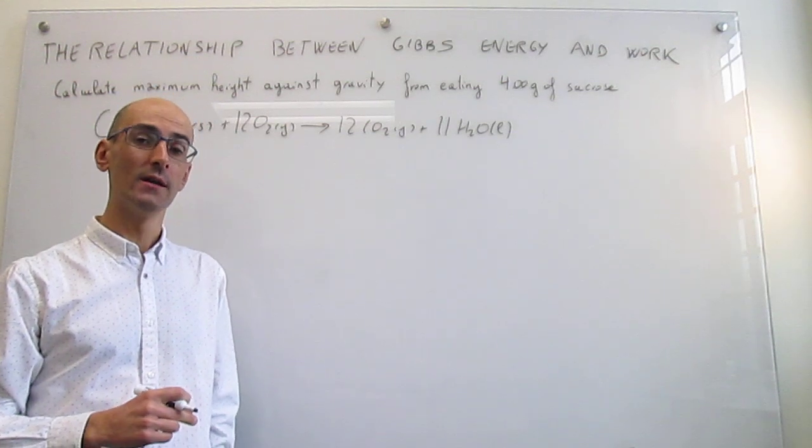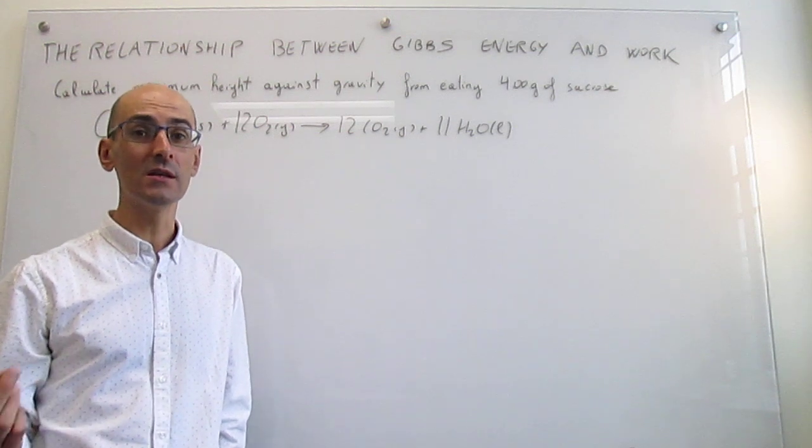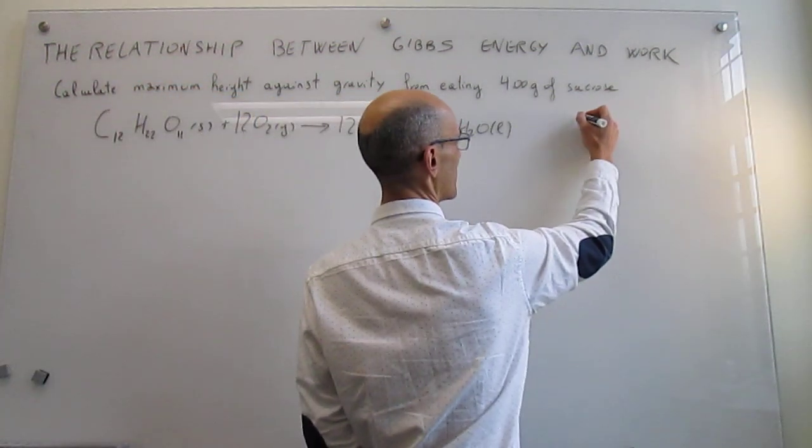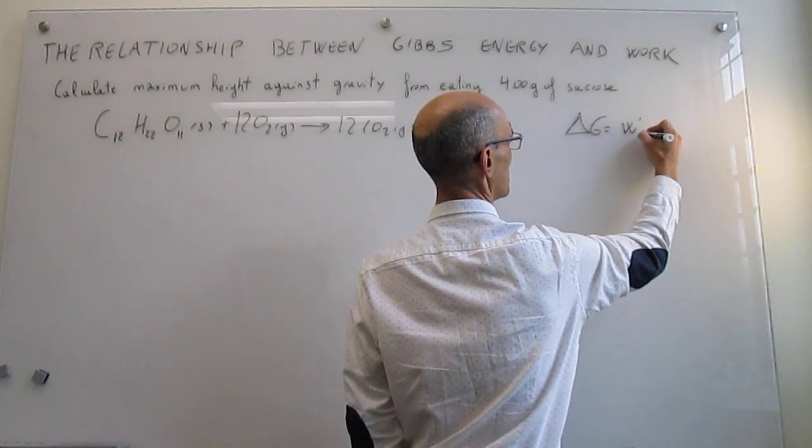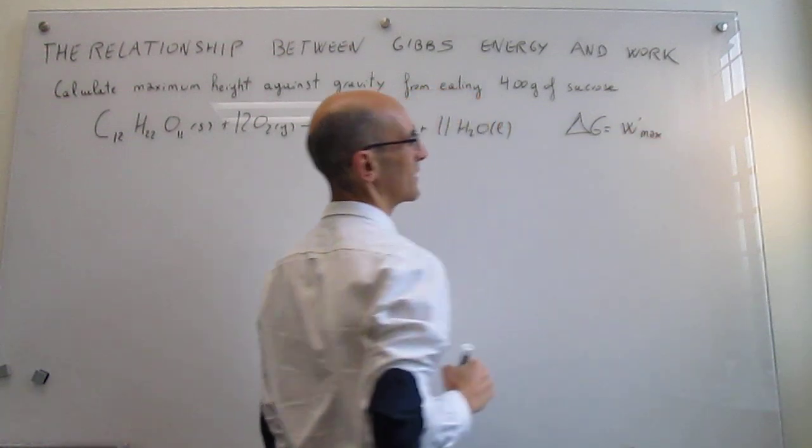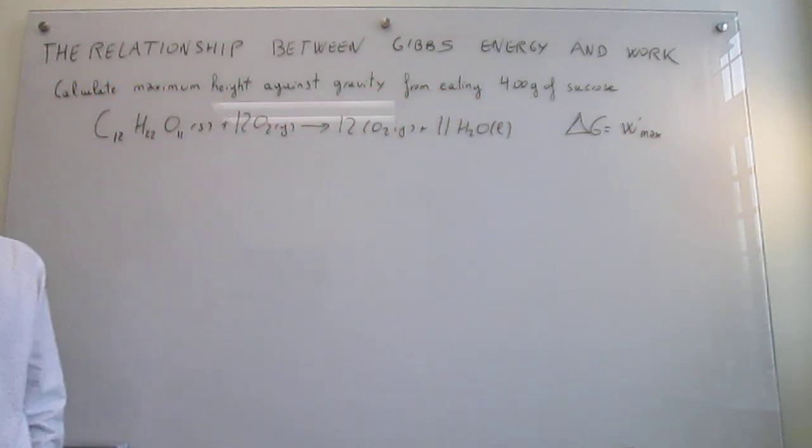At the heart of the problem is the connection between the Gibbs energy and work, and that connection is provided by this equation, which is that the change in Gibbs energy is equal to the maximum non-expansion work that you can get out of a process.